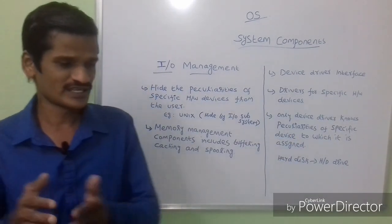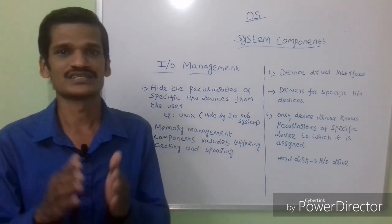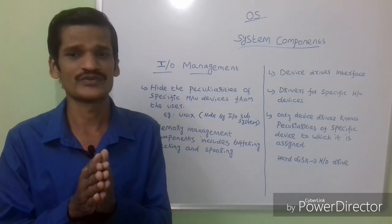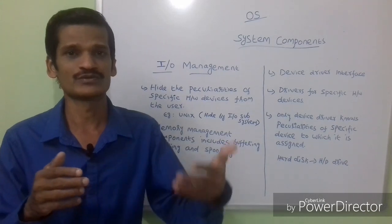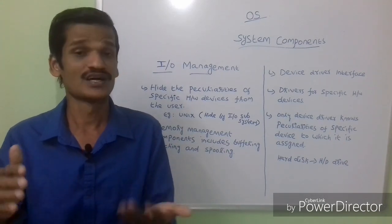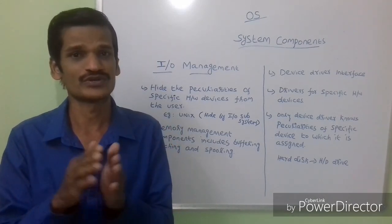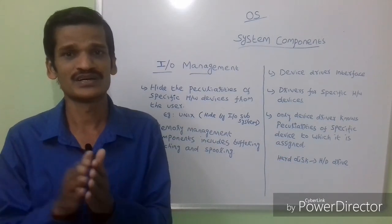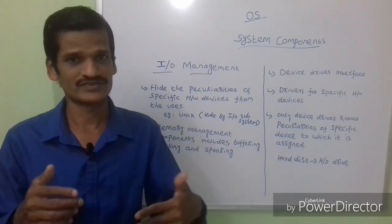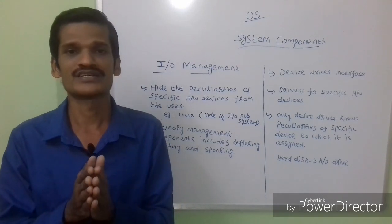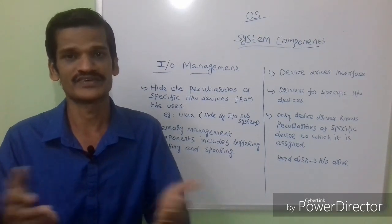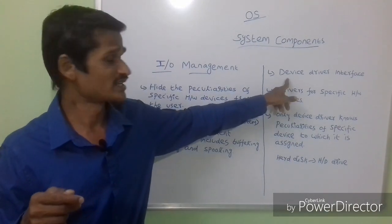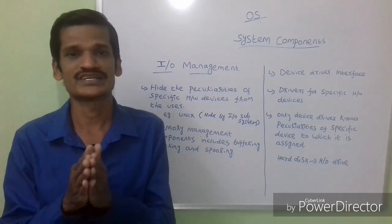Next is device driver interface. If you take any hardware component — for example, a hard disk — it has a hard disk drive. I hope all of you have heard the word 'driver.' Why do we need a driver? If you want to work with any particular hardware component, as I said, as a user we don't need to know the characteristics of that component. So how does it get identified? For that, we use a device driver. If you take a hard disk, we must use a disk driver — that is, a device driver interface.